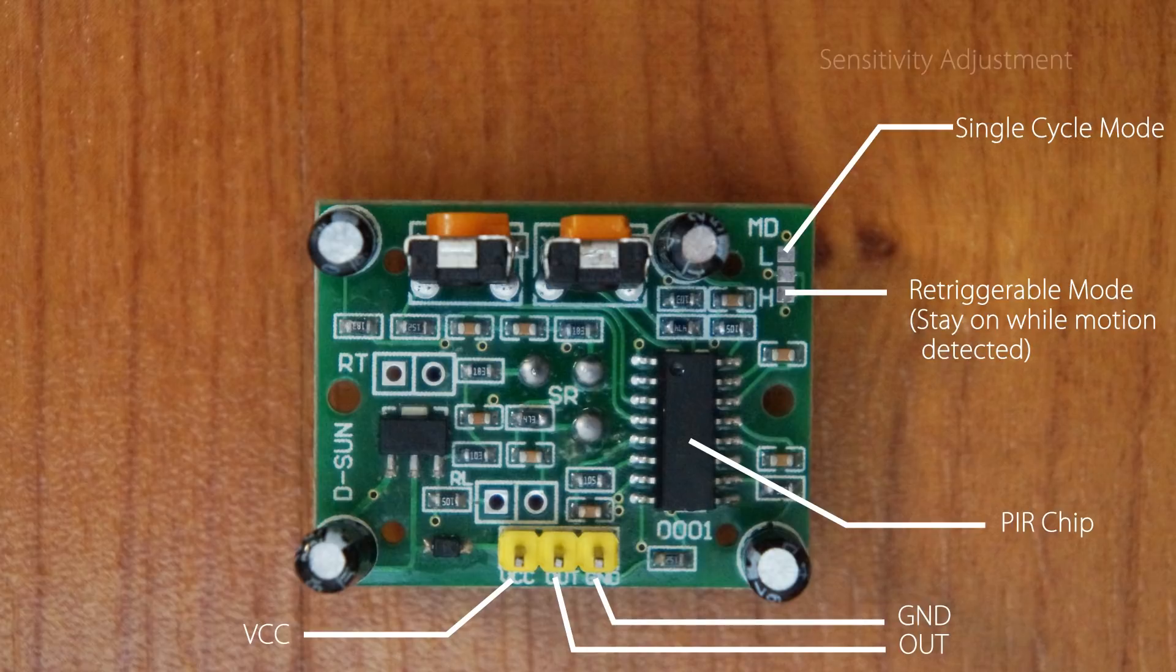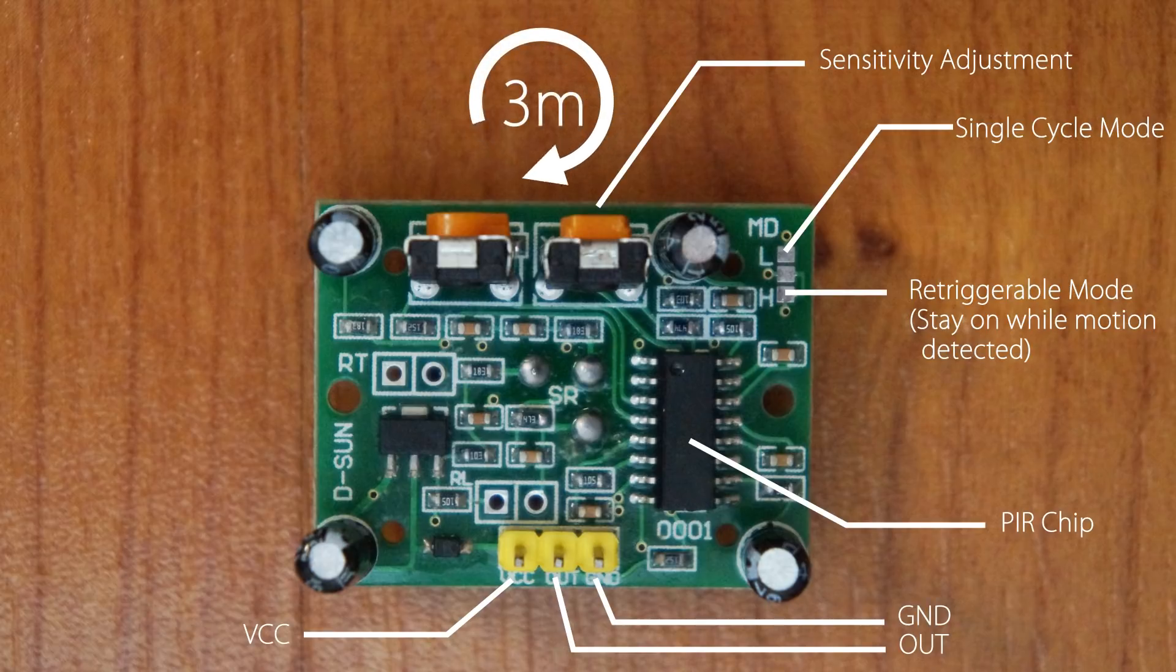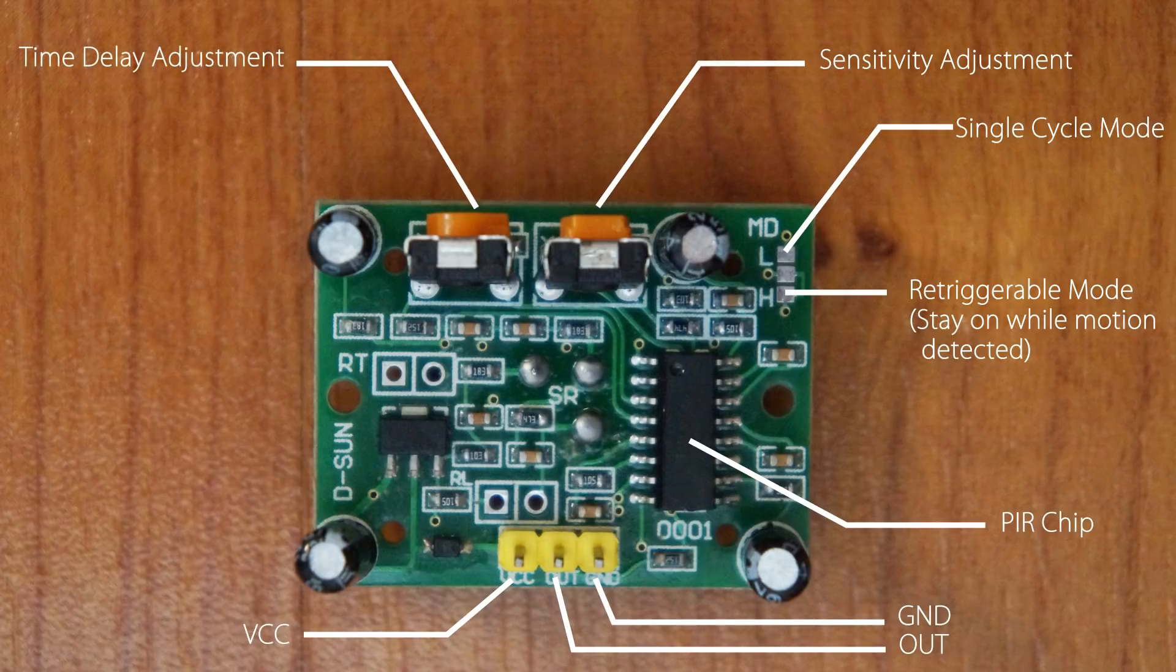The first one is the sensitivity adjustment. This can be adjusted between three to seven meters. Clockwise decreases the sensitivity whereas counterclockwise increases the sensitivity.